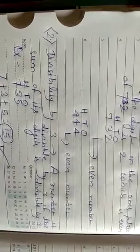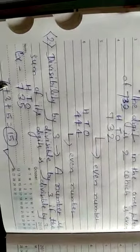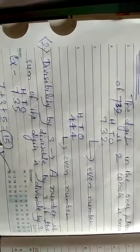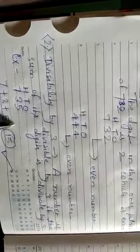Divisibility by 3. A number is divisible by 3 if the sum of its digits is divisible by 3. Means we have to add all the digits of the given number. So for example, we can see here 735. Means ones place 5, tens place 3, and hundreds place 7. So 7 plus 3 plus 5, that is 15. 15 is completely divisible by 3. So the whole number is divisible by 3.